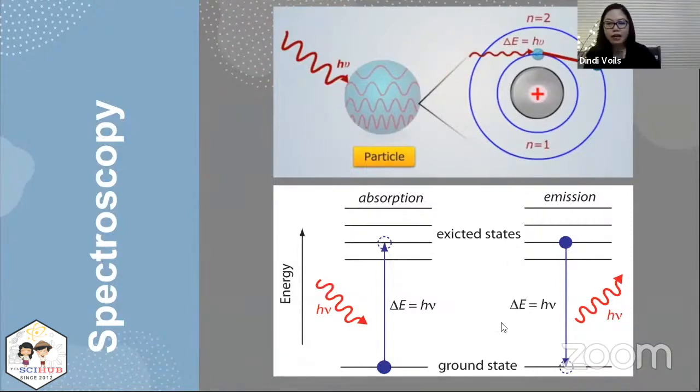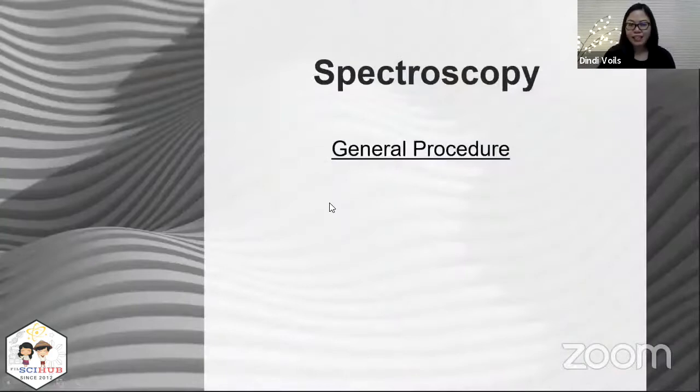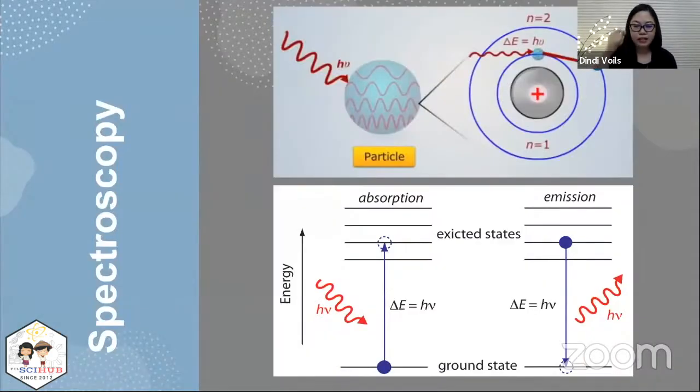On the energy diagram, you see that if the incoming energy or the EMR or electromagnetic radiation interacts with the particle at ground state, if the energy is equal to the energy of transition between electronic states or delta E, what happens is the particle gets excited and absorbs that energy. So that process is called absorption.